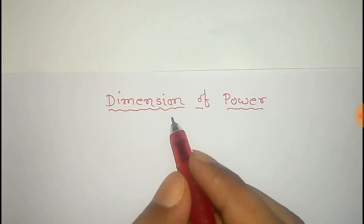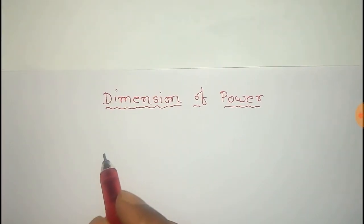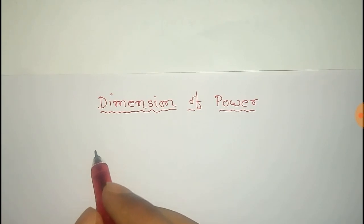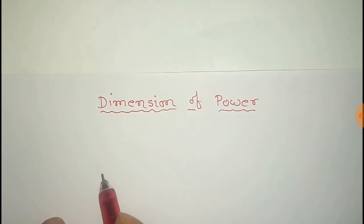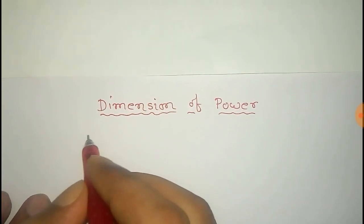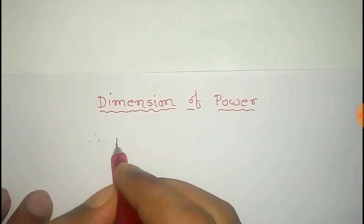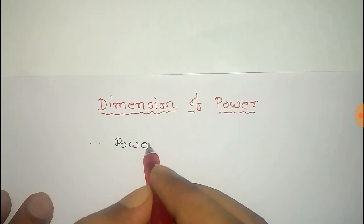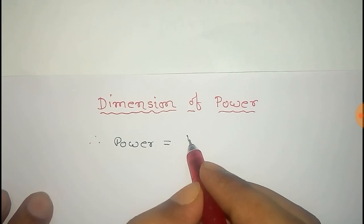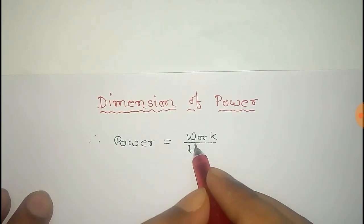In this video we will find the dimension of power. So first of all, what is power? It is the rate of doing work. So you can say that power equals work divided by time.